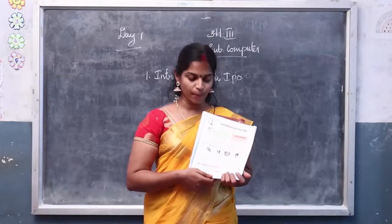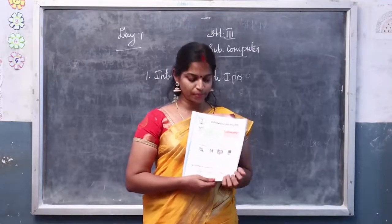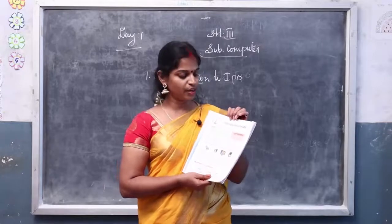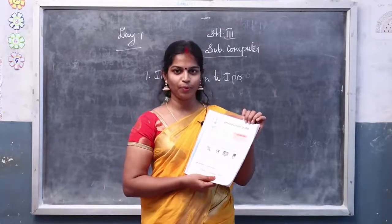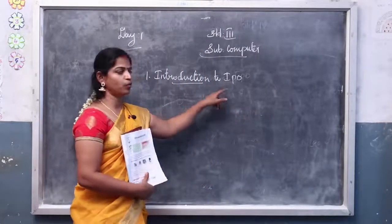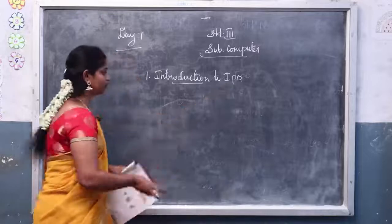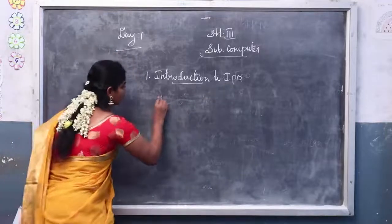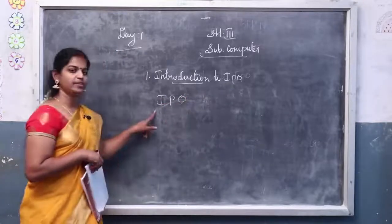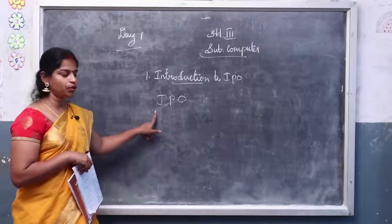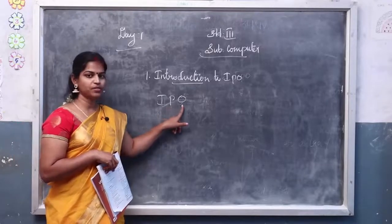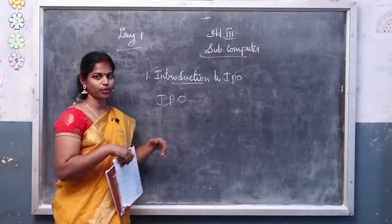All of you take your computer book, page number 7. First lesson: introduction to IPO. What is IPO? I stands for input, P stands for processing, O stands for output.